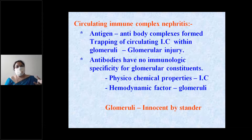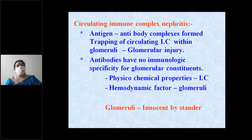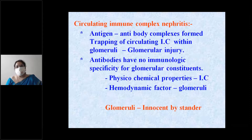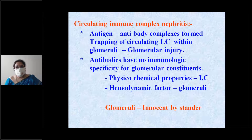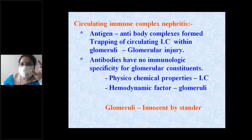Regarding circulating immune complex nephritis: antigen-antibody complexes in the circulation get trapped in the glomeruli, causing glomerular injury. The antibodies in circulating immune complex nephritis have no immunological specificity for glomerular constituents.